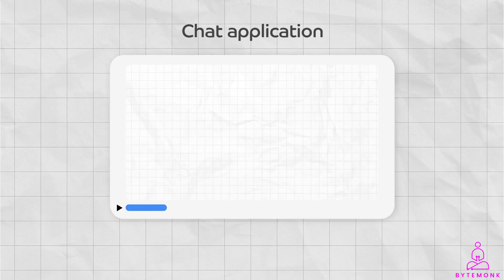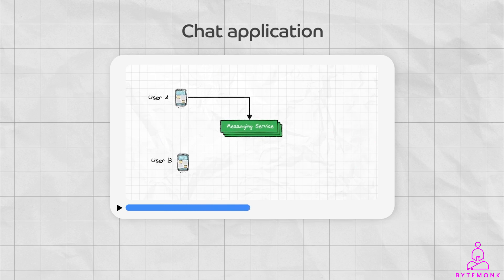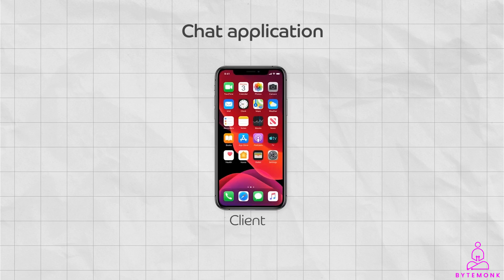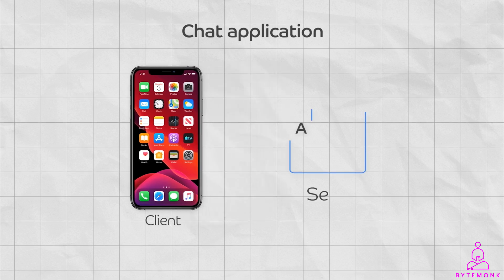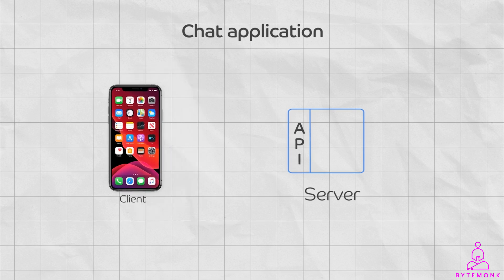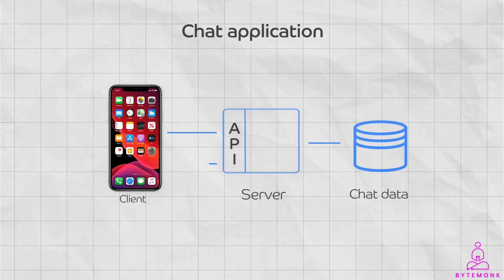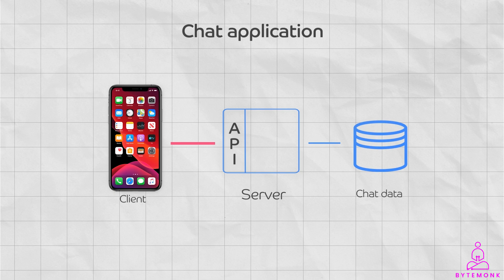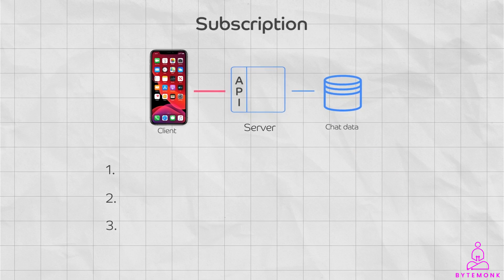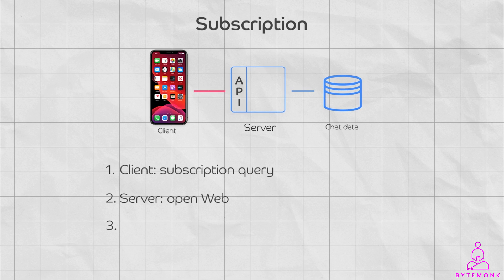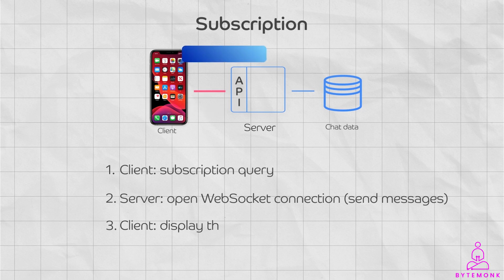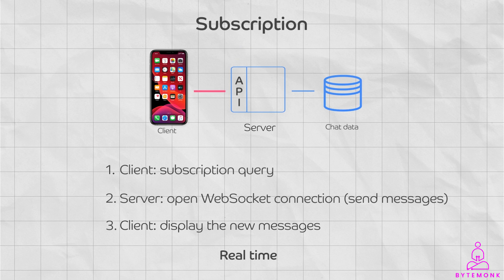In a chat application, the client is the application running on the user's device such as a mobile phone or computer, and the server is the application running on a remote server responsible for storing and managing chat data. They communicate using a network protocol such as HTTP or WebSockets. In three steps: the client sends a subscription query to subscribe to new messages in the chatroom; the server opens a WebSocket connection and sends updates whenever there are new messages; and the subscribed client displays the new messages in the chat window.